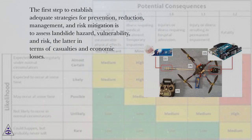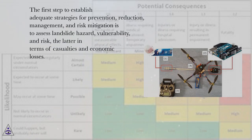The first step to establish adequate strategies for prevention, reduction, management, and risk mitigation is to assess landslide hazard, vulnerability, and risk — the latter in terms of casualties and economic losses.